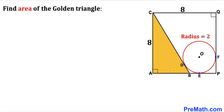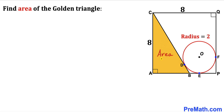Welcome to Premath. In this video we have got square APQC along with a golden triangle ABC, such that a circle with center O is confined in between them. Points D, E, F are the points of tangency. The side length of this square is 8 units, whereas the radius of this circle is 2 units. Our task is to calculate the area of this golden right triangle ABC.